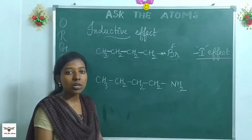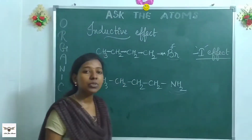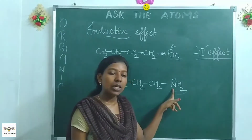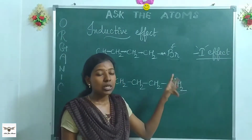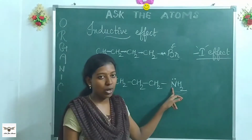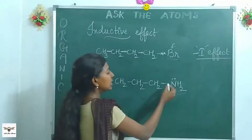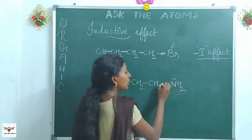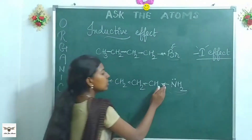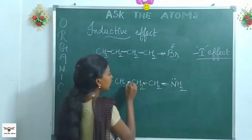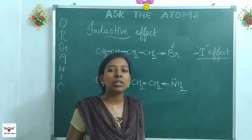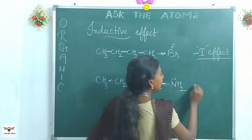The other case is completely opposite. Look at the amine group: nitrogen holds a lone pair of electrons, and though nitrogen is electronegative, it is willing to release its electrons — it is basic, like ammonia. So what happens is the electrons move from nitrogen into the carbon chain. The electrons move away from nitrogen towards the chain, so electrons are now closer to the carbon skeleton. This is called the plus I effect.